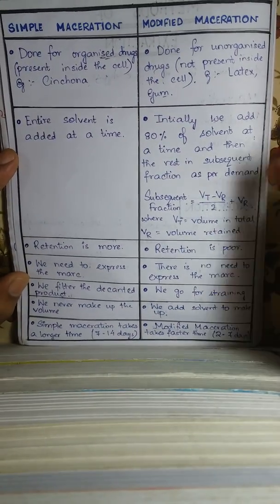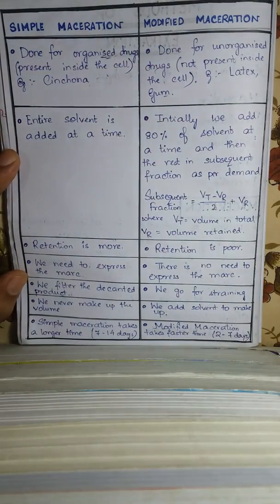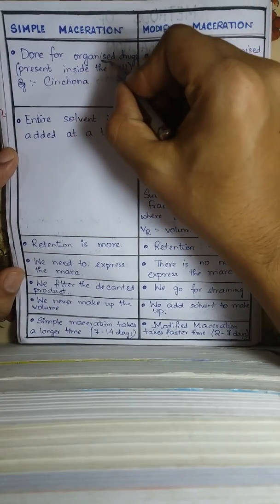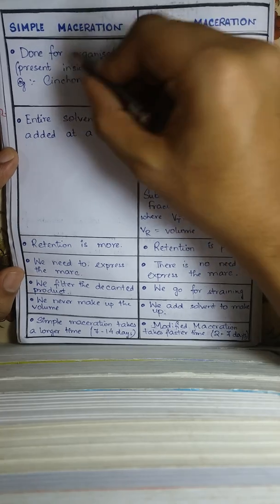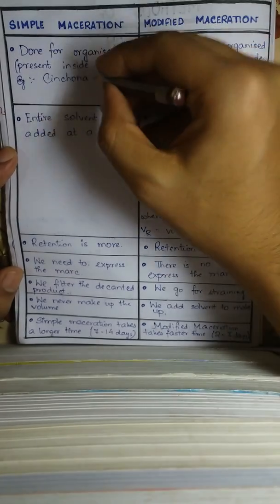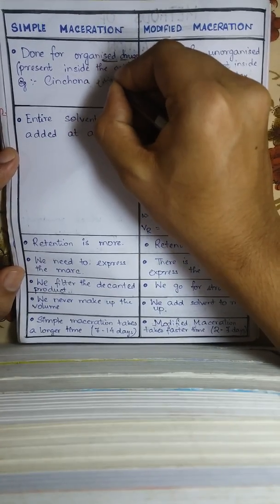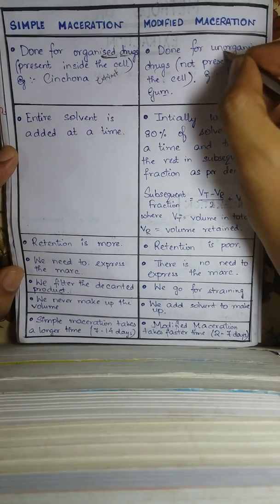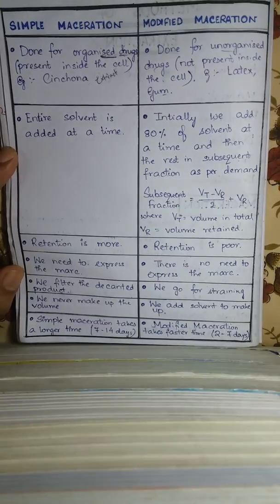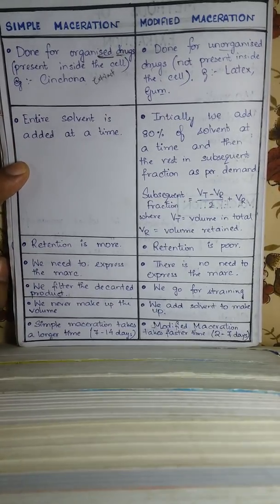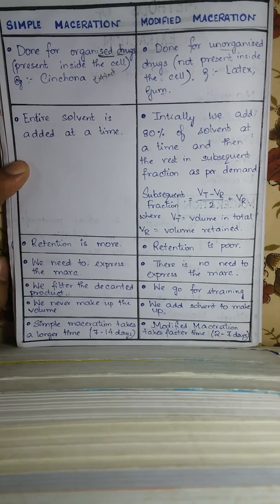First, simple maceration is done for organized drugs — those which are present inside the cell, for example cinchona. Modified maceration is done for unorganized drugs — those which are not present inside the cells, like latex and gum.